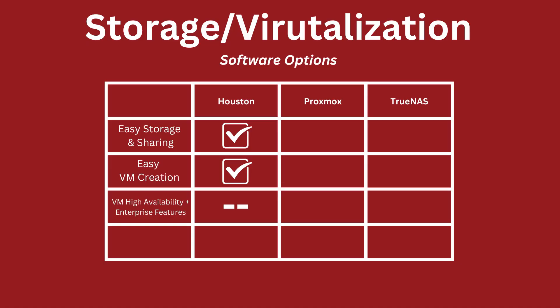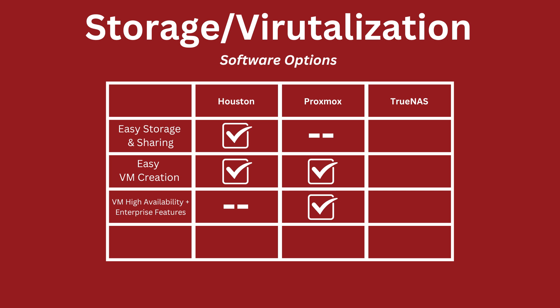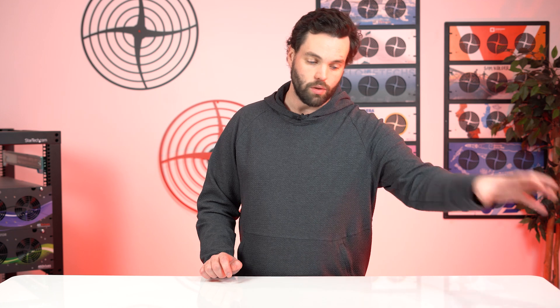To wrap up: if it's a storage box and you just need a simple VM or two, Houston is perfect — really easy to set up. If you want more of a virtual machine and containerized environment where the whole purpose is high availability and making virtualization easy, Proxmox is a great choice. That's a quick lay of the land. As always, comments, social media, info at 45drives.com — call us, we want to hear from you. We've done a lot of Proxmox content and we can do more on virtualization with Houston as well. Thanks for watching!